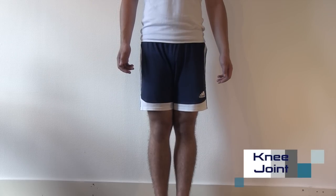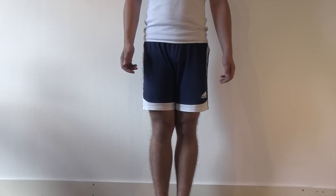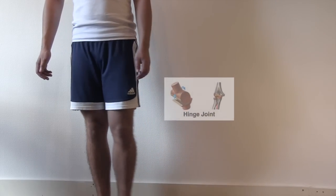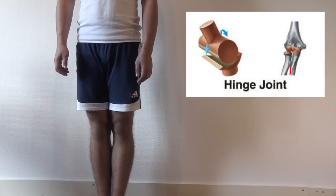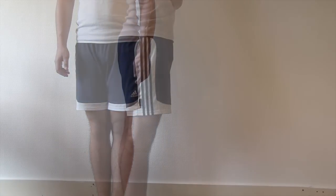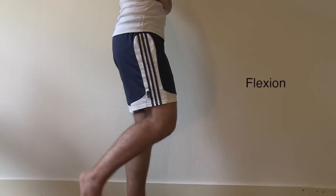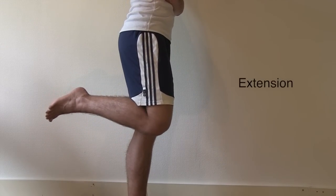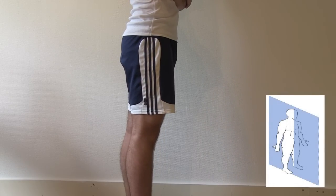Knee joint. To give you an example of a joint that does not have all possible three degrees of freedom, we will take the knee joint. The knee joint is morphologically and functionally a hinge joint, which means it only has one degree of freedom — it can only move in one plane. The only two movements that can happen in the knee joint are flexion and extension. As we have learned, these two movements always take place in a sagittal plane.